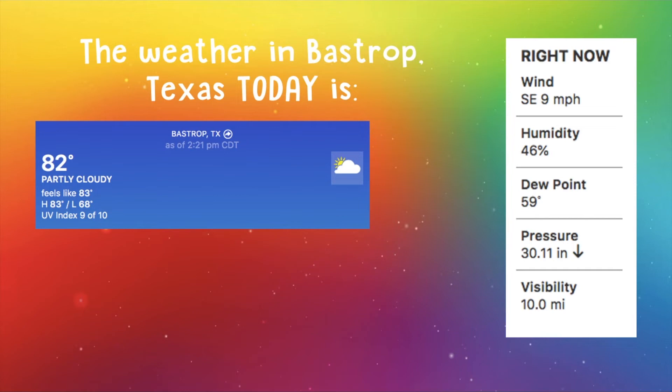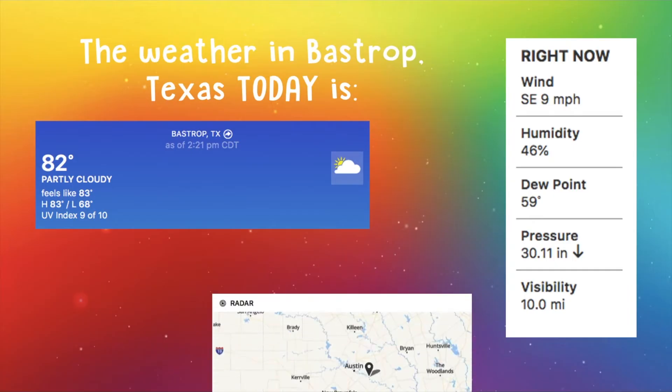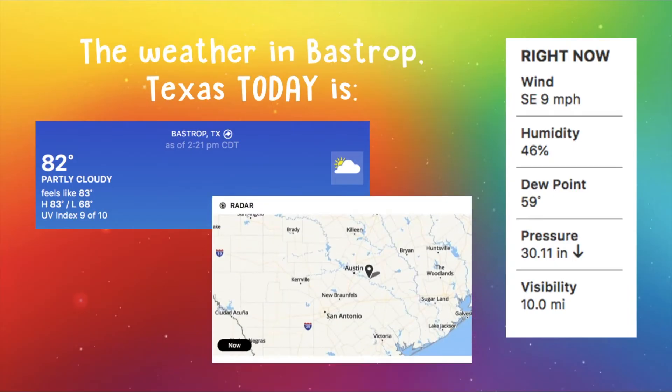The wind is southeast at nine miles per hour. Humidity at 46%, the dew point is 59 degrees. The pressure is 30 and 11 hundredths inches. Visibility is 10 miles. If we look at the radar, there's not much cloud coverage, even though it says it's partly cloudy. The weather is what's happening right now — what is the weather like today where you live?